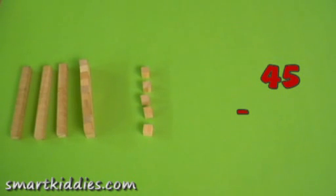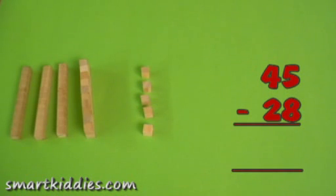Now if I want to take away 28 from this number, we look at the units first. I've only got 5 units. I can't really take 8 away from 5, can I? So I'm going to have to trade.